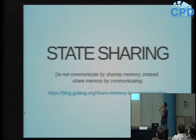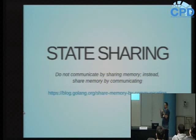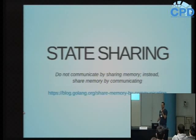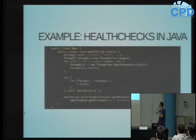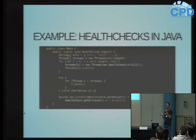Em relação ao compartilhamento de estado, um dos mantras do Go é que a gente não deve se comunicar compartilhando memória, e sim compartilhar memória se comunicando. A ideia é que não devo compartilhar uma variável entre diferentes GoRoutines porque posso ter problemas de concorrência. Eu implementei um exemplo de healthchecks em Java para ilustrar como seria com threads, e depois vou mostrar como ficaria em Go.